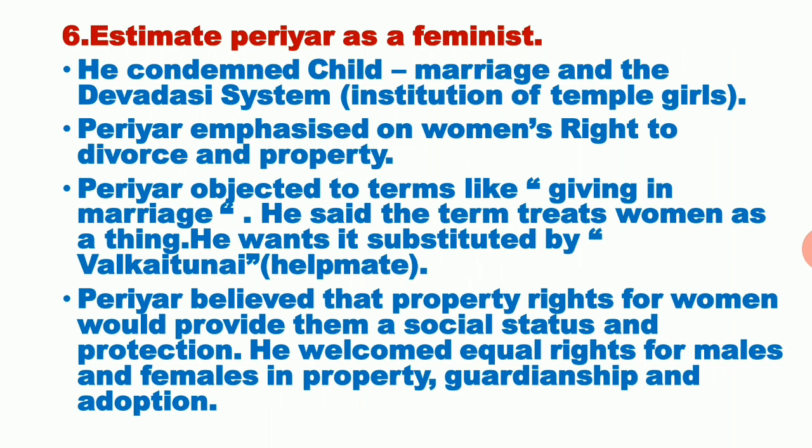Next question: estimate Periyar as a feminist. He condemned child marriage and the Devadasi system — the institution of temple guilds. Many people in Tamil Nadu and India followed child marriage, which he strongly condemned. The Devadasi system was introduced by the Cholas about a thousand years ago; Devadasis performed dances during festival times in temples, but later their conditions became very miserable under Zamindar landlords.